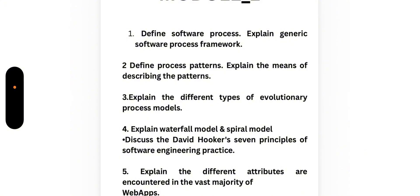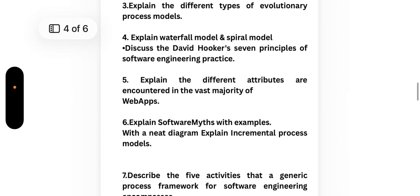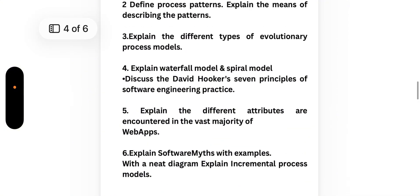Fifth, explain the different attributes encountered in the vast majority of web apps. Sixth, explain software myths with examples, with a neat diagram, and explain incremental process models. Last, describe the five activities that a generic process framework for software engineering encompasses. That covers Module 1. Now moving to Module 2, another passing module.